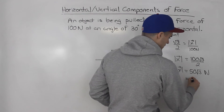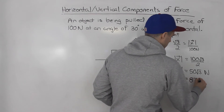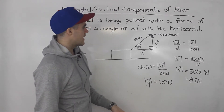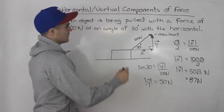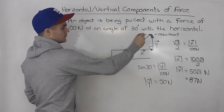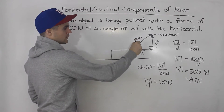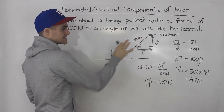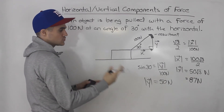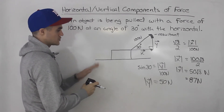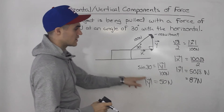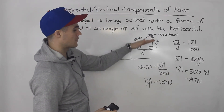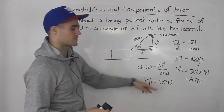And if you wanted decimals, that horizontal component would be around 87 newtons. So these numbers represent the horizontal force and the vertical force acting on this object to give us a resultant of 100 newtons. What these numbers mean is that a force of 100 newtons acting at 30 degrees to the horizontal is the same as if we had two different forces: pushing the object horizontally at 87 newtons and pushing the object up at 50 newtons.